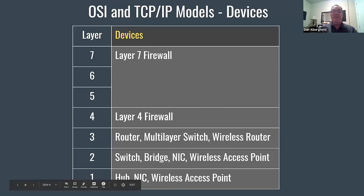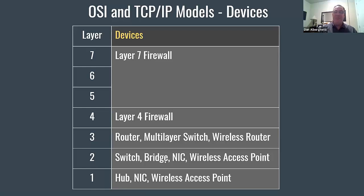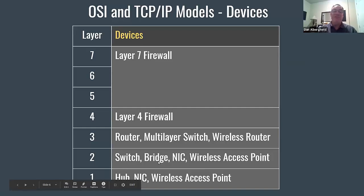A bridge is another term for a switch. In the early days, a switch was called a bridge because it only had two ports — in one, out the other, like a bridge. When they first invented switches, they called them multi-port bridges. At layer three, you have a router, a multi-layer switch (which is a switch and router combined), and a wireless router.